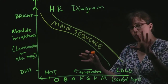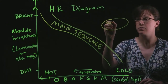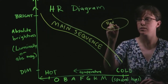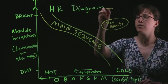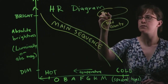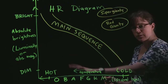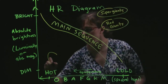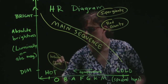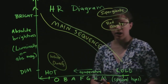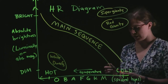We see other parts of the diagram filled with objects. Over here we have red giants — red because they are cold, and giants because they are large. Above them we have supergiants. And then off in the bottom left corner we have white dwarfs — white because they are hot, blue-white in color, and dwarfs because they are physically very, very small compared to other stars.